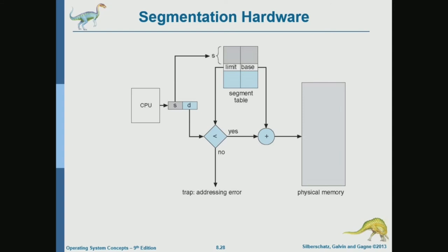So we have a segment-based address with a segment number and a displacement. The segment table will be indexed by the segment number — so the index within the segment table is the segment number. Each segment will have its own entry in the segment table.